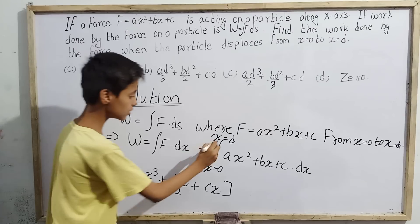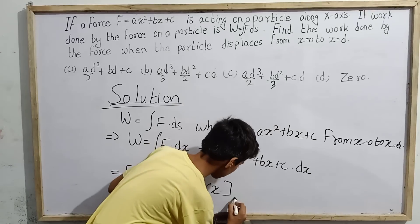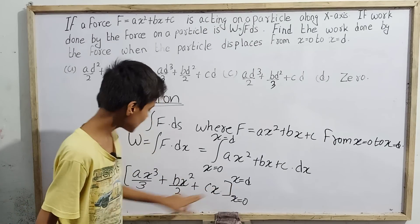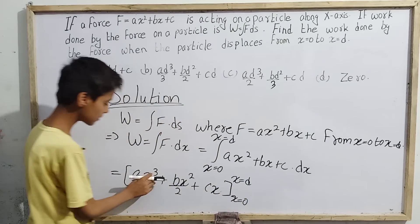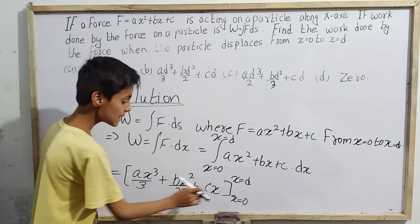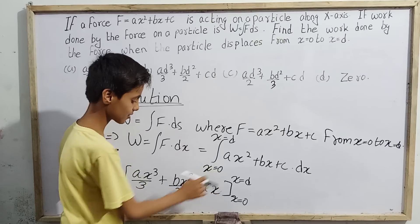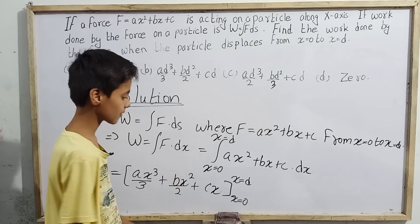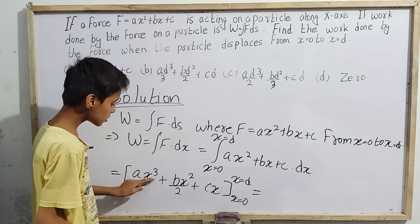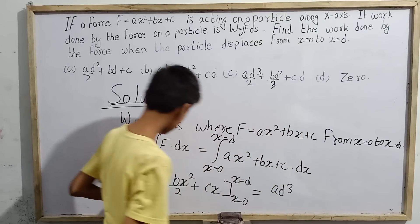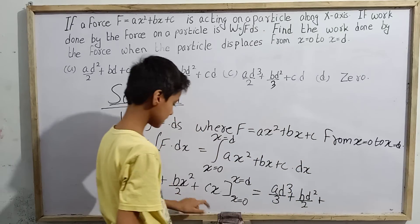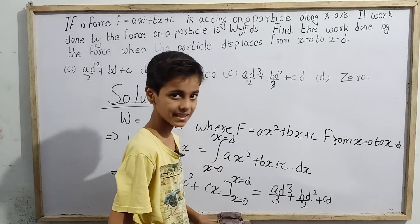We put the result under brackets and apply the limits from x equals 0 to x equals d. First we substitute the upper limit x equals d: we get ad³/3 plus bd²/2 plus cd.